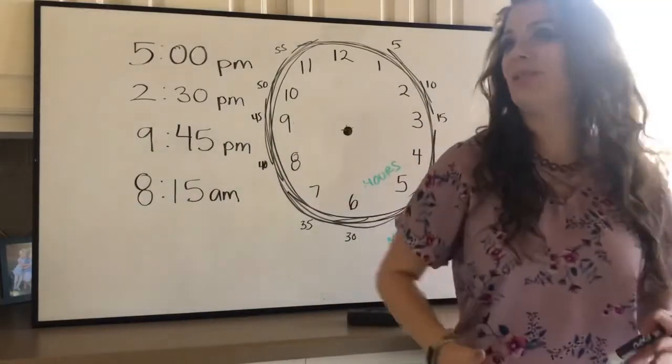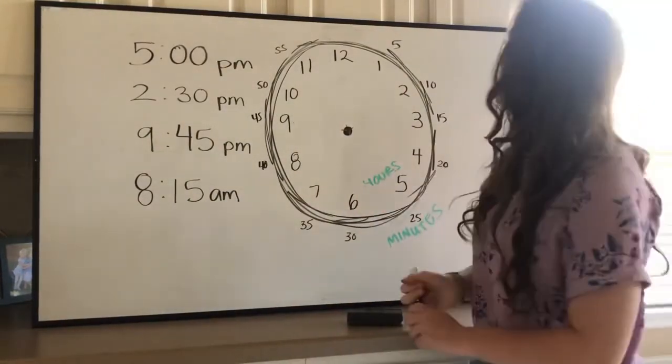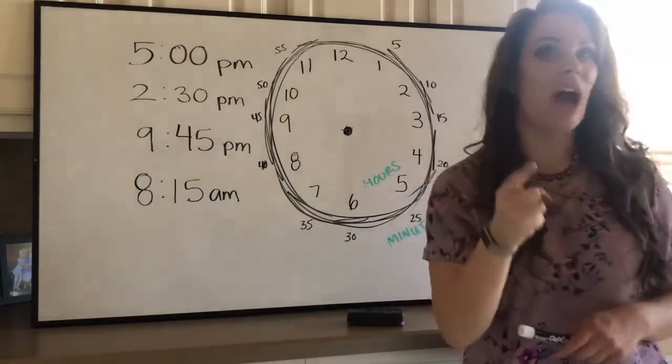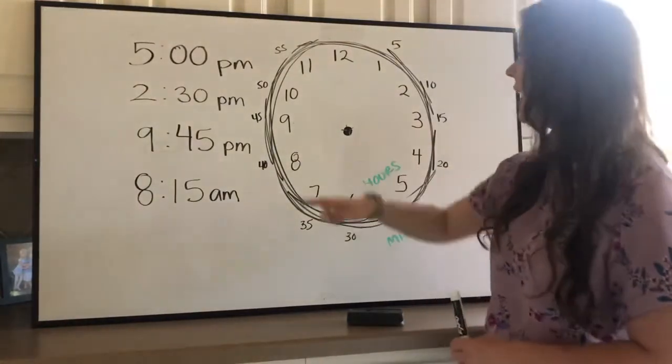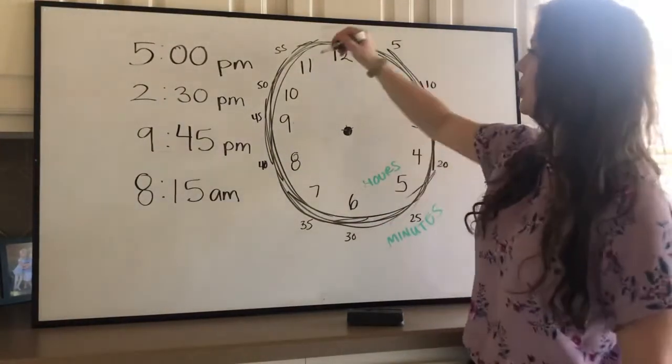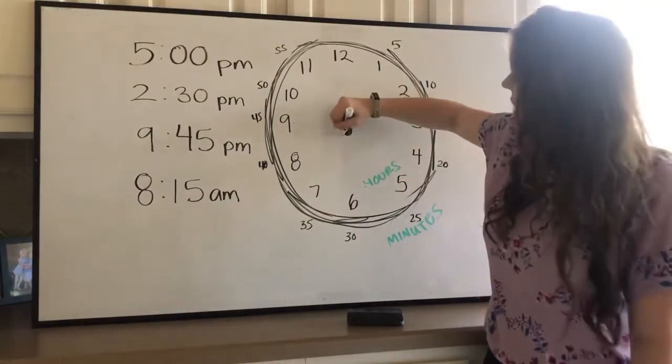All right, and our last one, 8:15. Let's see, our hour. Let's get our hour first. So our small hand would point to the eight. Of course, simple enough.